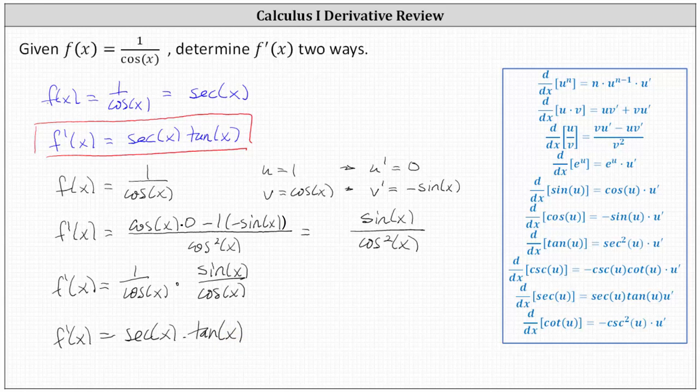Of course, giving us the same derivative function. So here's two ways we can determine the derivative of f of x equals one divided by cosine x. I hope you found this helpful.